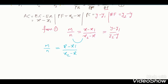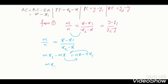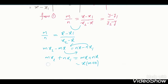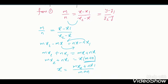Cross multiply: mx2 − mx = nx − nx1. Bringing terms together: mx2 + nx1 = mx + nx = x(m + n). Therefore x = (mx2 + nx1)/(m + n). So we got the x-coordinate of P.